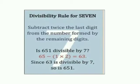Divisibility rule for 7: subtract twice the last digit from the number formed by the remaining digits. Example: 651 — the last digit is 1, double of 1 is 2, and the remaining number is 65. 65 minus 2 equals 63. Since 63 is divisible by 7, therefore 651 is also divisible by 7.